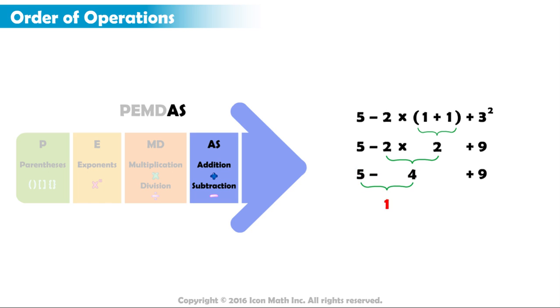Last, we add 1 and 9. 1 plus 9 equals 10. The final result of evaluating this expression is 10.